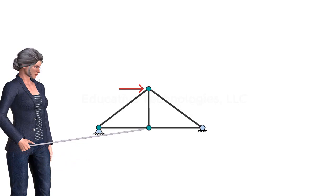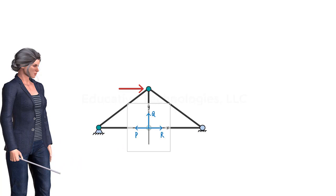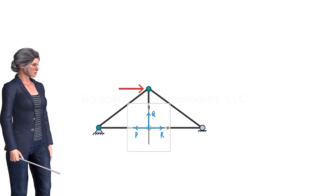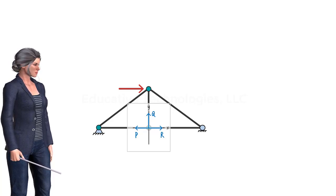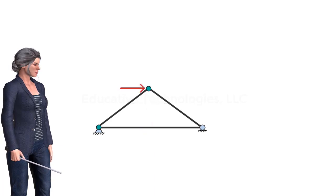Now let's examine this joint. Here there are three forces — two of them act in the X direction and one force acts in the Y direction. Since the sum of the forces in the Y direction must be zero, Q must be zero. In the X direction, we know that the sum of P and R must be zero, but that does not mean the forces are zero; they just need to add up to zero. So the only conclusion we can draw here is that force Q equals zero. Removing the zero force member, we now end up with this simplified truss.